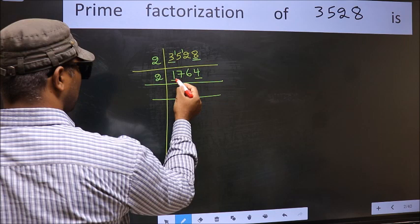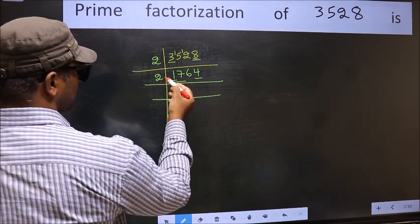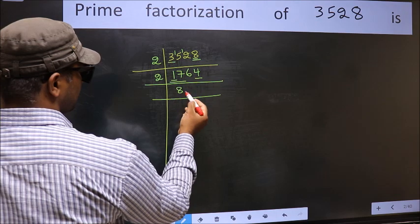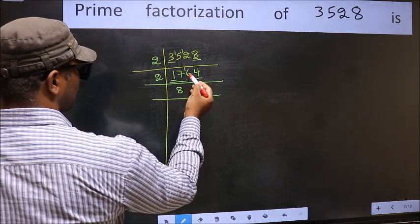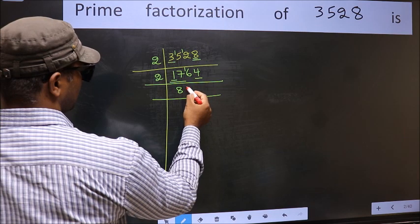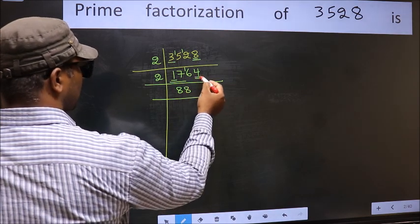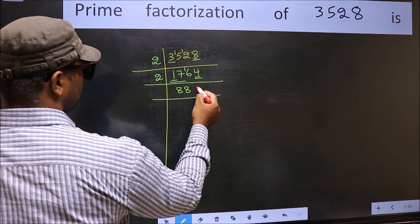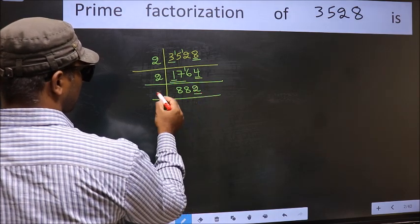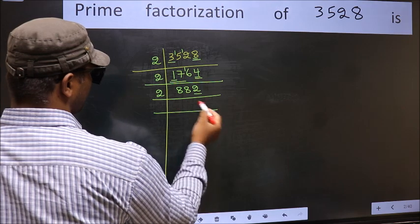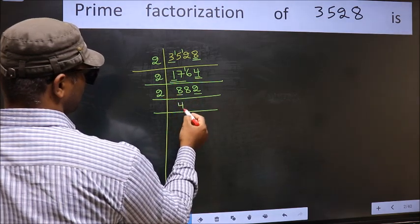Now the last digit is 4, which is even, so take 2. First number 1 is smaller than 2, so take 2 numbers: 17. A number close to 17 in the 2 table is 2, 8's 16. 17 minus 16 is 1, 1 carried forward 16. We get 16 in the 2 table: 2, 8's 16. The other number 4 — we get 4 in the 2 table: 2, 2's 4. So 1764 ÷ 2 = 882.